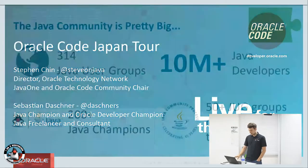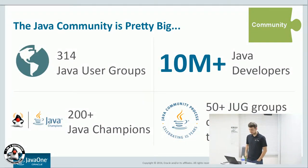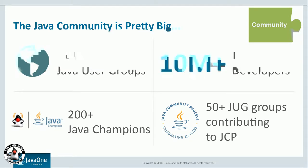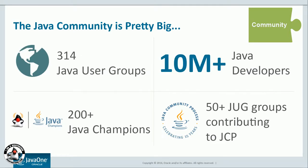So about the Java community — it's pretty big. We have over three hundred Java user groups and 10 million Java developers worldwide. Who in this room is a Java developer? All of you should raise their hands — you're part of 10 million. That's great.